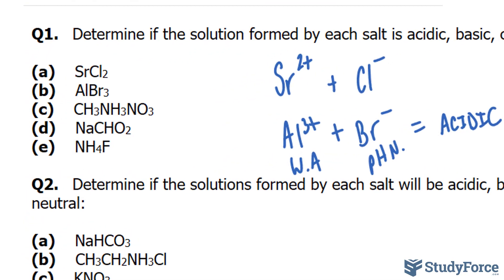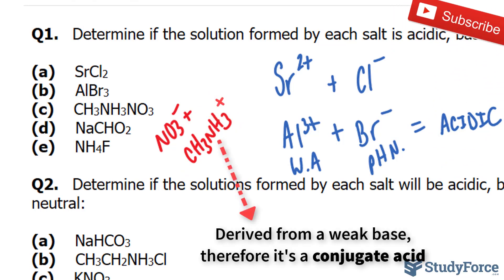This molecule is a combination of the anion NO3- and the cation CH3NH3+. The CH3NH3+ ion is a conjugate acid of a weak base. And so we can say that it's acidic.